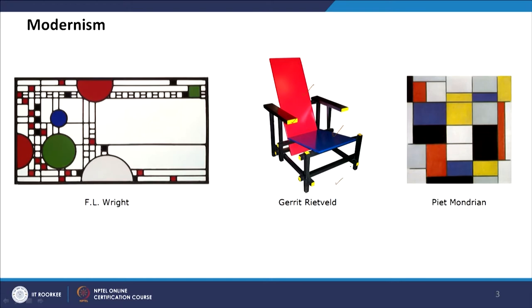Looking at some modernist paintings, design, and architecture, we can see similarities. As we were discussing, primary colors appear in furniture design as well as in paintings. This painting by a famous architect is similar to furniture design, and the De Stijl movement uses a similar color palette — all talking about the same visual language.